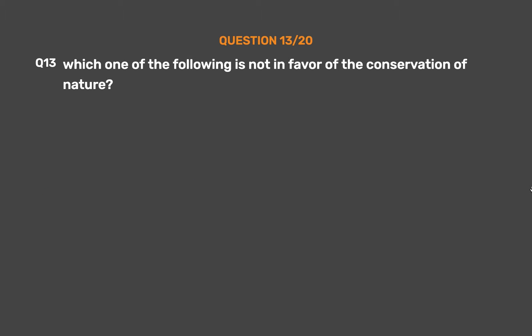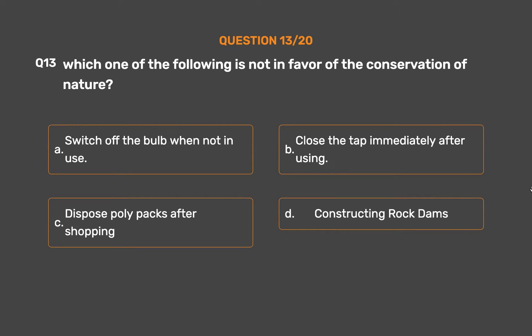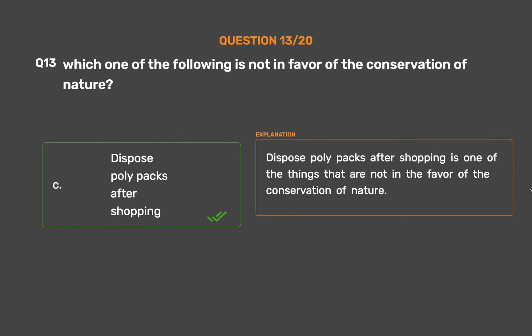Question No. 13. Which one of the following is not in favor of the conservation of nature? Option A: Switch off the bulb when not in use. Option B: Close the tap immediately after using. Option C: Dispose polypacks after shopping. Option D: Constructing rock dams. The correct answer is Option C: Dispose polypacks after shopping, as it is not in favor of the conservation of nature.